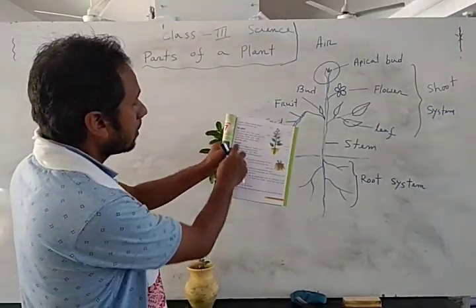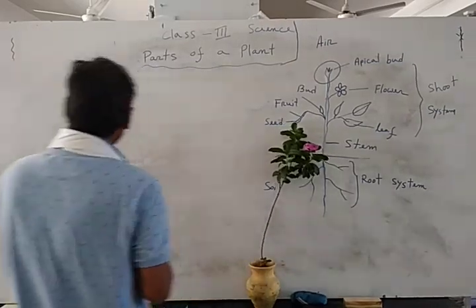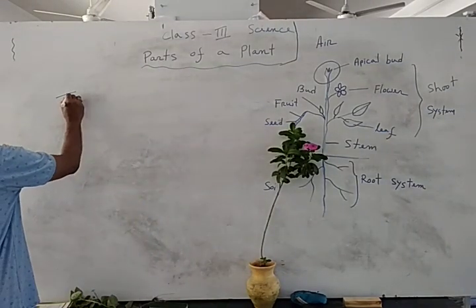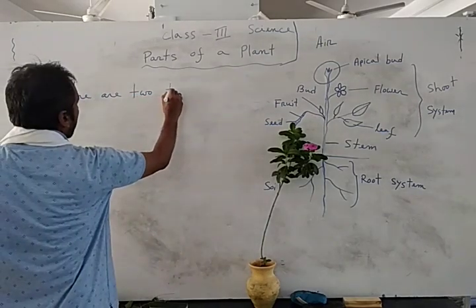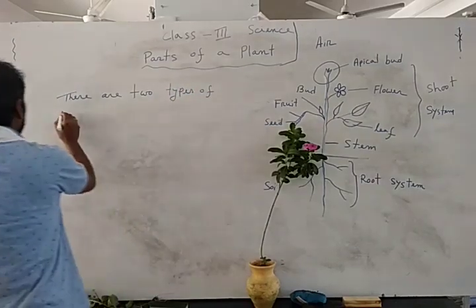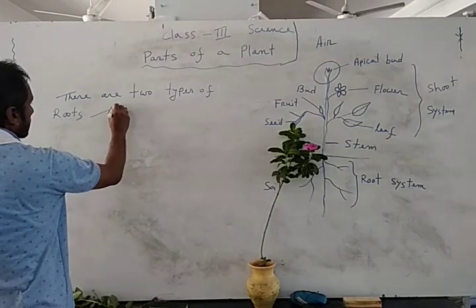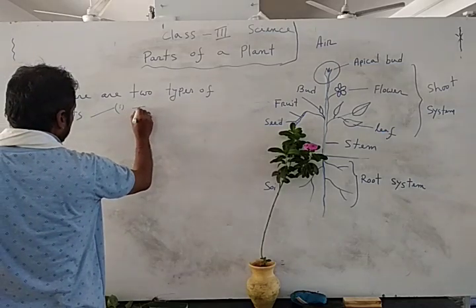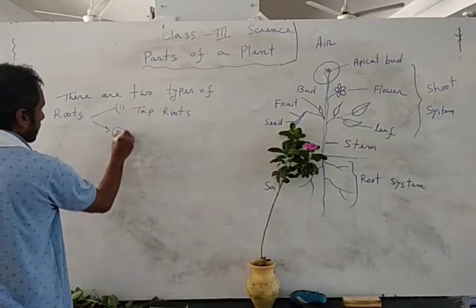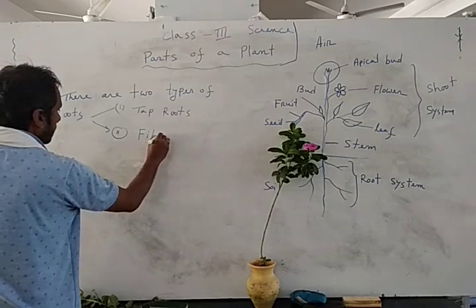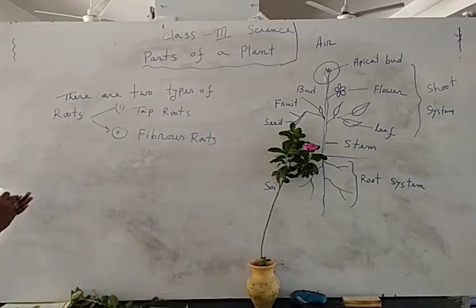In the second phase, very important: there are two types of roots. One is tap roots and another is fibrous roots. So now let us discuss about the root system.